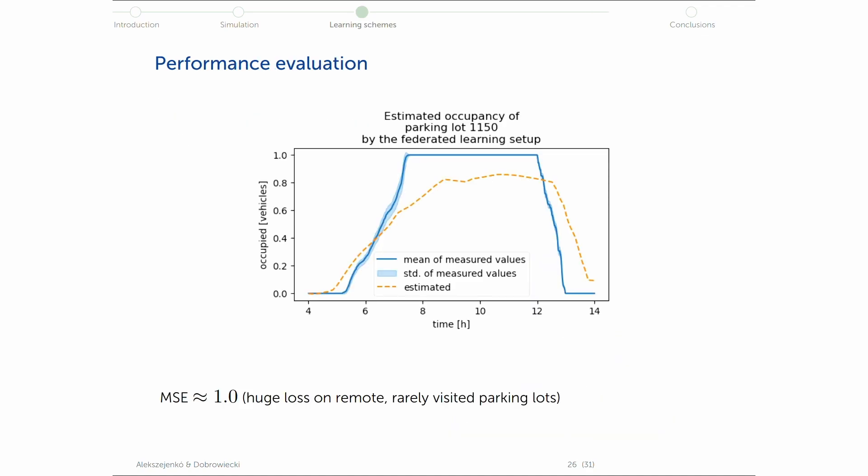And of course, it behaves a little bit more accurately than an individual learning scheme. However, there are still limitations that there are remote parking lots in Monaco that are seldom visited. And of course, the loss is very high on these parking lots. But the curvature scheme is more or less reproduced. So it's something, I guess.